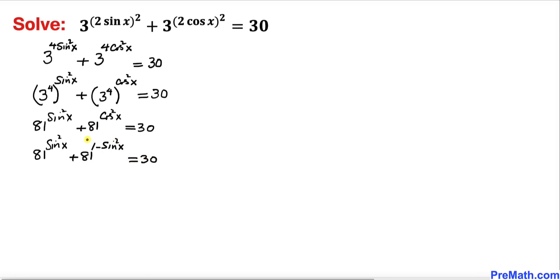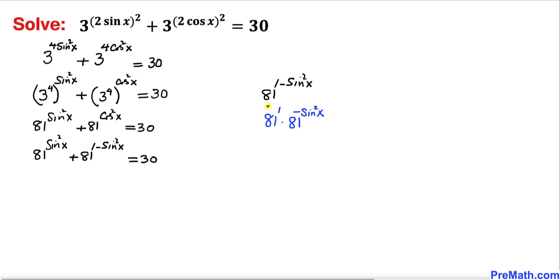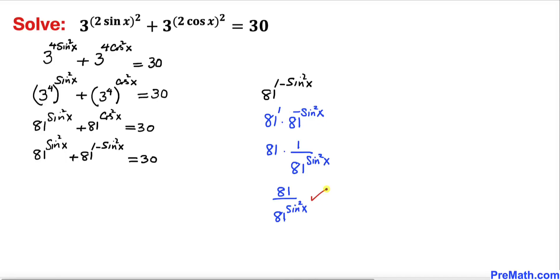Let's focus on the term 81^(1 − sin²x) and simplify it. Using the rules of exponents we can write 81^1 times 81^(−sin²x), which equals 81 divided by 81^(sin²x). So our equation becomes 81^(sin²x) plus 81 divided by 81^(sin²x) equals 30.